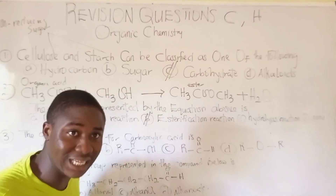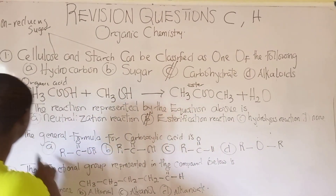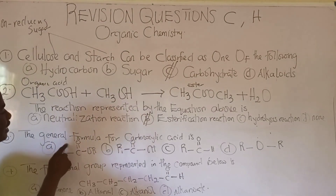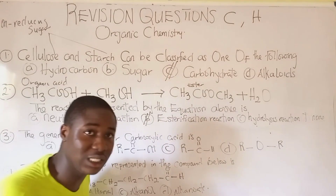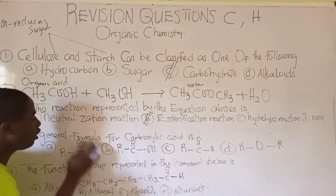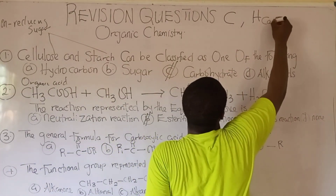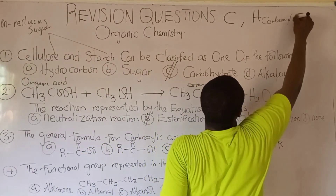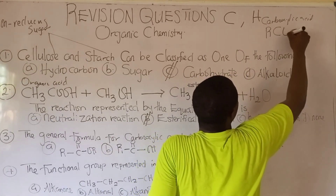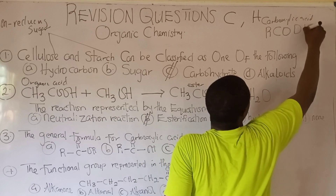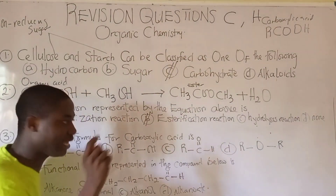All of these questions must be noted for the forthcoming exam. Question 3 says: the general formula for carboxylic acid. The general formula for carboxylic acid is given as RCOOH.